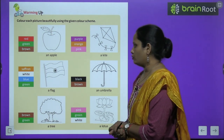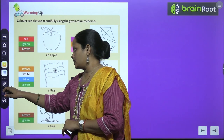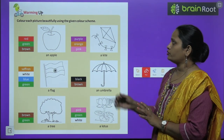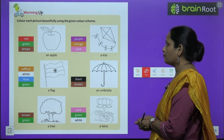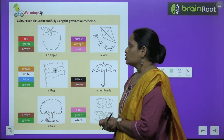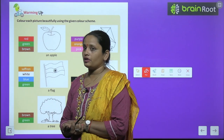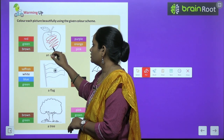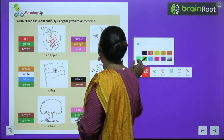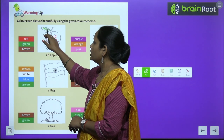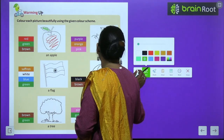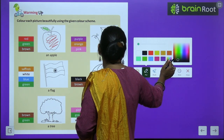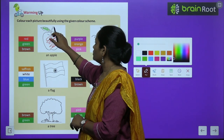Let's start with the warming up exercise. Here you have to colour each picture beautifully using the given colour shades. You have to use red, green, and brown. So colour the red apple, then the green leaf, and the brown stem.